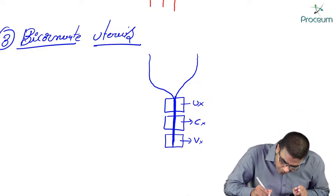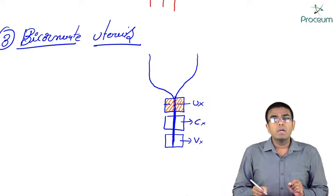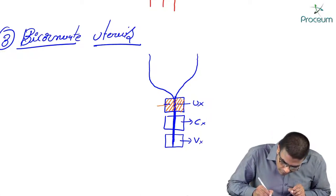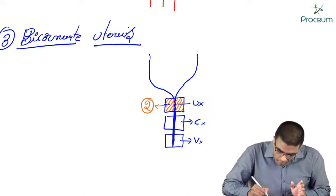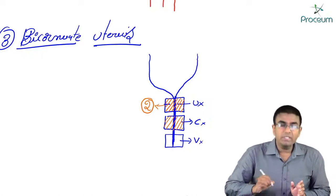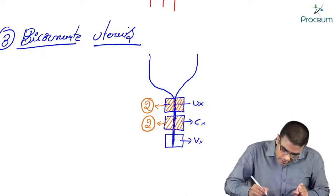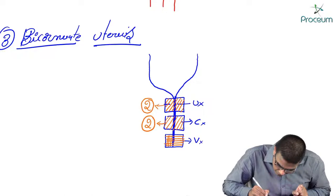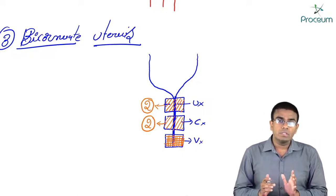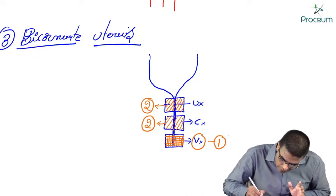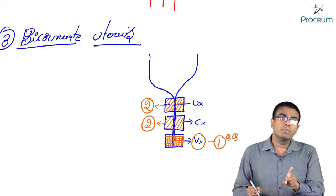Because the upper part of the Mullerian ducts is not fused, there are two uteruses and two cervixes. But since the lower part is completely fused, there is only a single vagina. So in bicornuate uterus: two uteruses, two cervixes, and one vagina. This is a very important MCQ — how many vaginas in bicornuate uterus? Answer: one vagina.